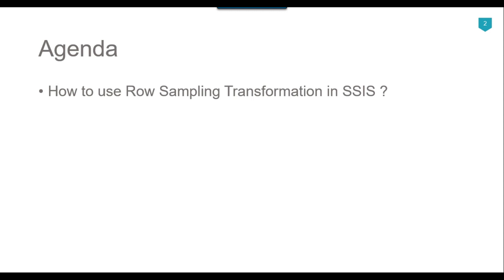Row sampling transformation in SSIS is used if you want to get a subset of data. For example, if you have a table which contains maybe 1 million or 5 million records and for testing you need a small portion of the data, you can use the row sampling transformation. It can also be used in a lottery-based system where you have 100,000 records and need just random 10 or 100 records. It will randomly select a small portion of the data from the whole data. So let's jump to the demo.